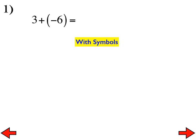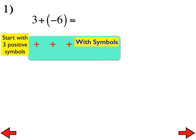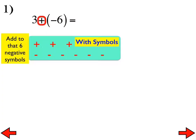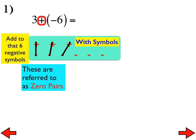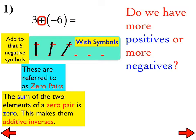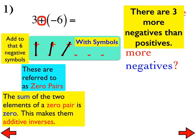With symbols, here's how we do this problem. We start with three positive symbols because of the positive three, and we add to that six negative symbols. From that picture, there are three zero pairs, so we can cross them out, and we can clearly see that we are left with three negative symbols. That's one reason why 3 + (-6) = -3. Do we have more positives or more negatives? We clearly have more negatives — in fact, three more negatives than positives.